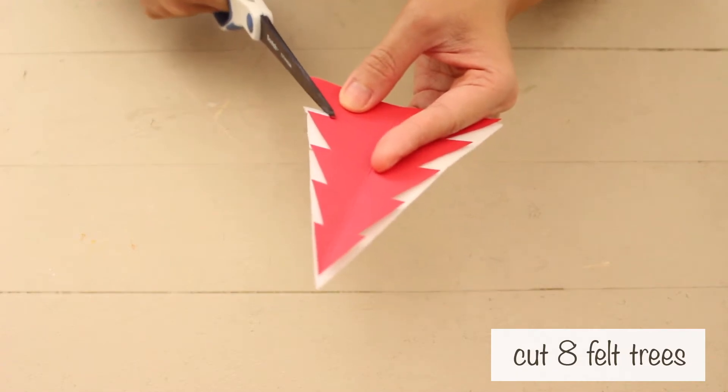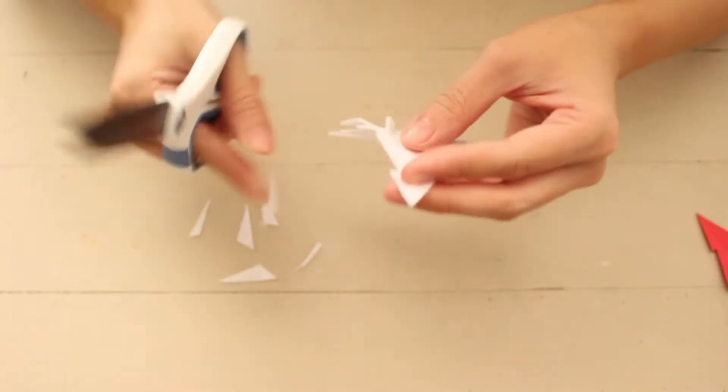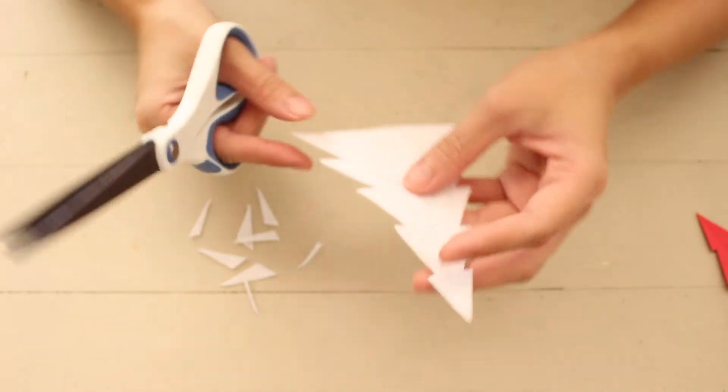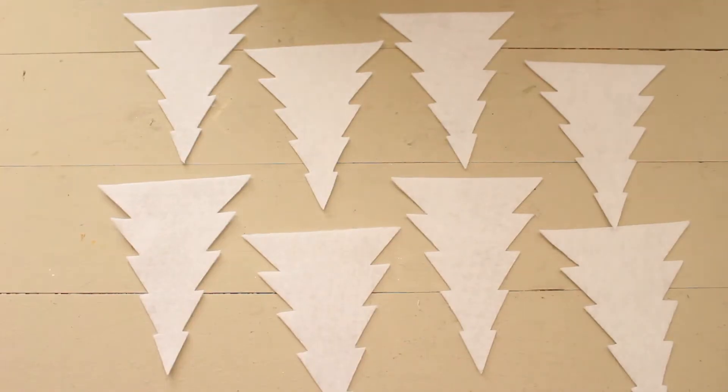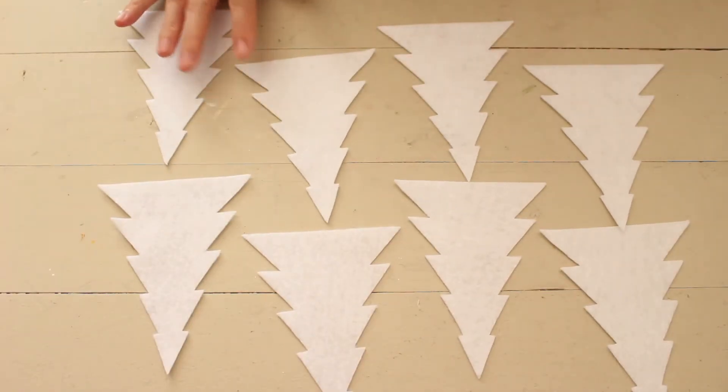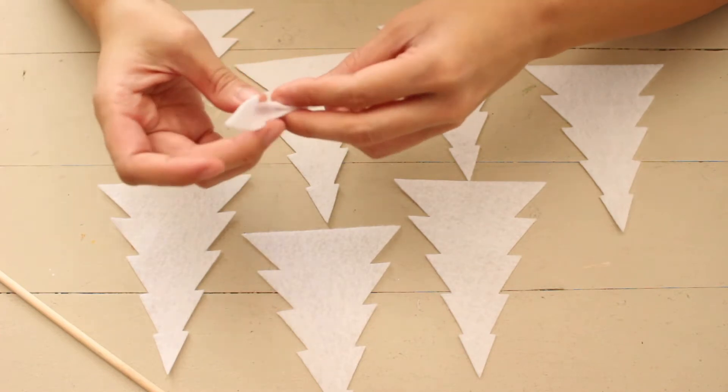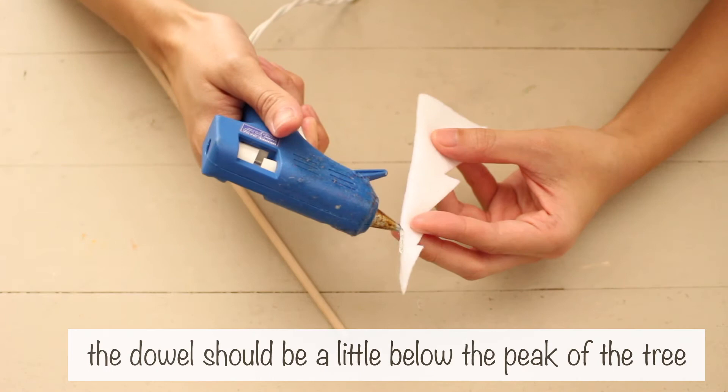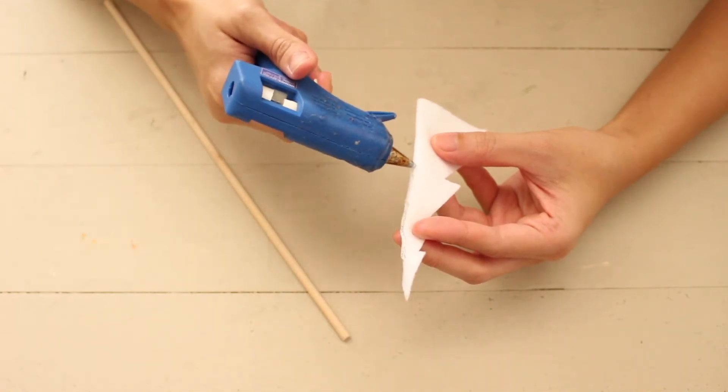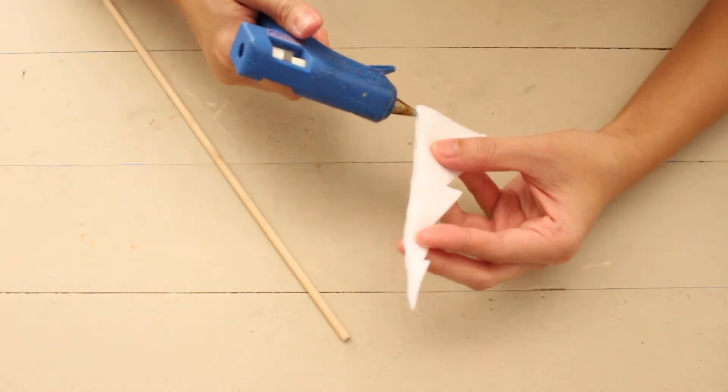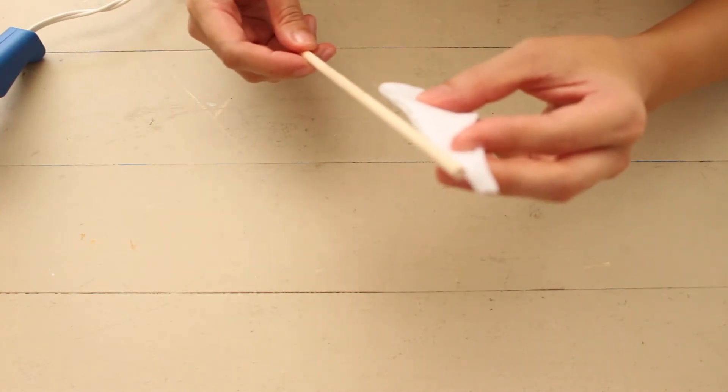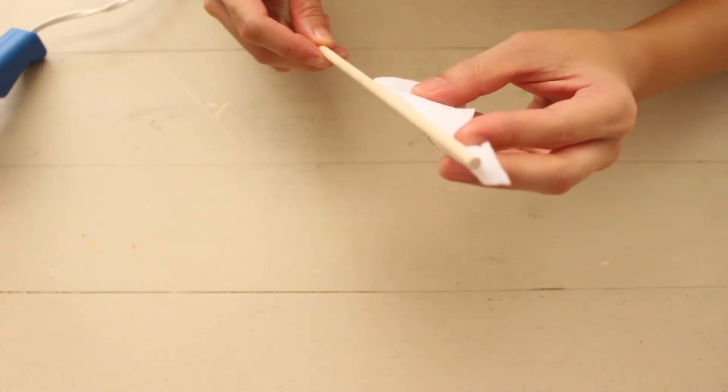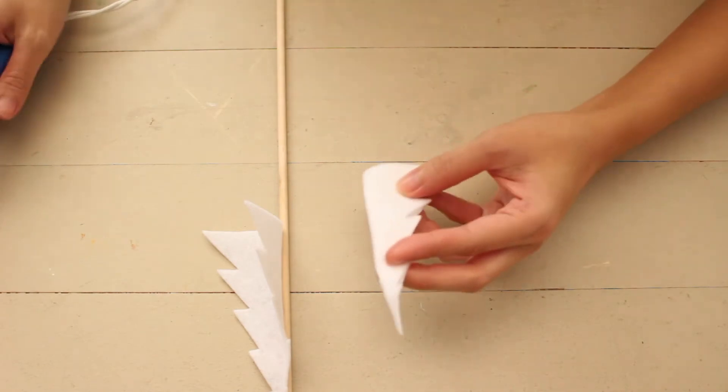I cut 8 felt trees. Fold each tree in half and glue the fold to the dowel. Do this 8 times.